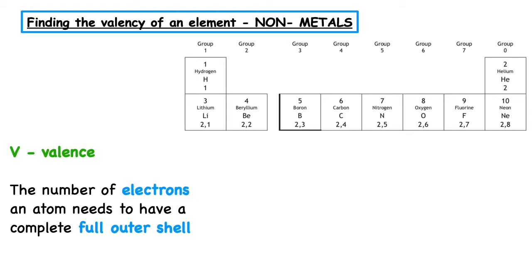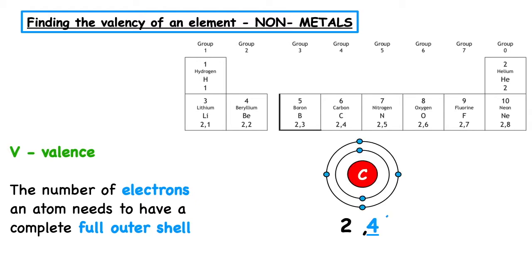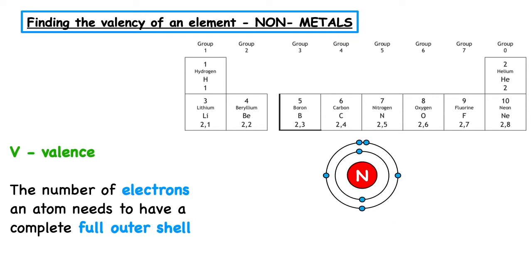Elements found in Group 4 have four outer electrons in their outermost shell. They need to gain four electrons to achieve stability, so elements found in Group 4 have a valency of four. Elements in Group 5, such as Nitrogen, which has the chemical symbol N and the electron arrangement 2-5, needs to gain three electrons to achieve stability. So elements found in Group 5 will have a valency of three — that's the number of bonds they need to achieve a full stable outermost shell.